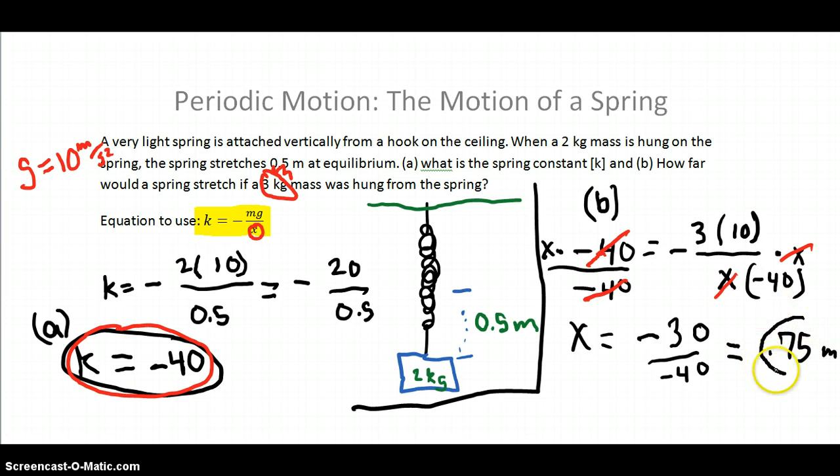Okay, and that's the answer for part B of the problem. We have two answers to this problem. The spring constant was negative 40, and if we hang a 3 kilogram mass on it, instead of stretching 0.5 meters, like it did in the first part of the problem, now it stretches 0.75 meters. And that concludes this problem.